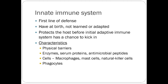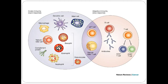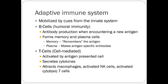Just a quick review so we're all on the same page: your innate immune system is your first line of defense, present at birth, involving physical barriers, enzymes, macrophages, mast cells, natural killer cells, and phagocytes. We're more interested in the adaptive immunity — the B cell and T cell process — which is more amenable to pharmacologic manipulation.